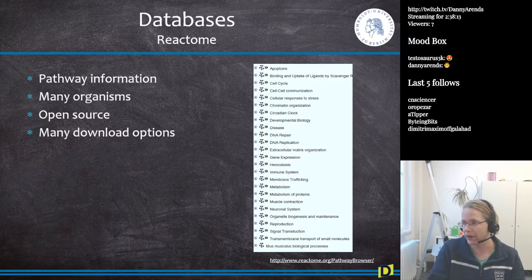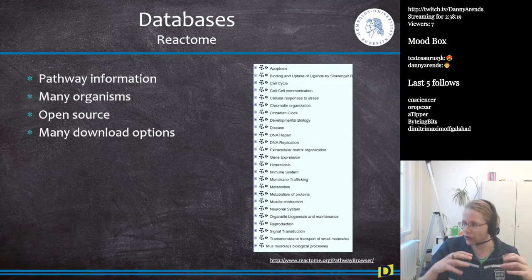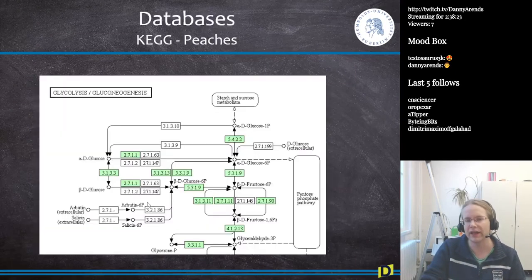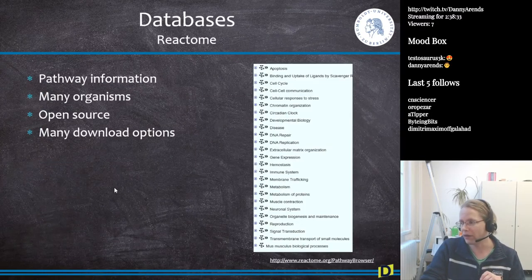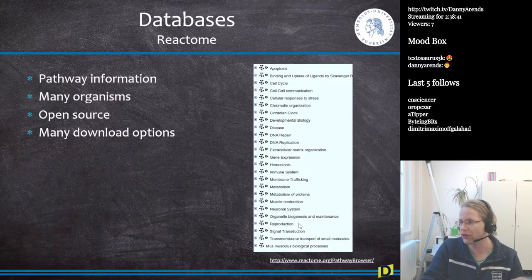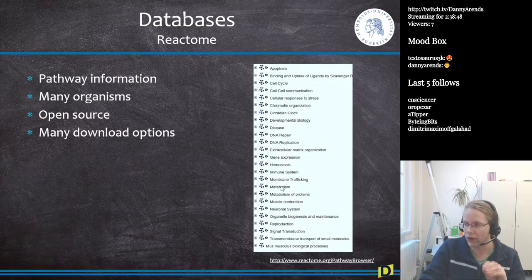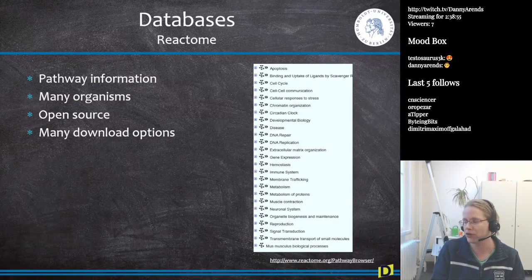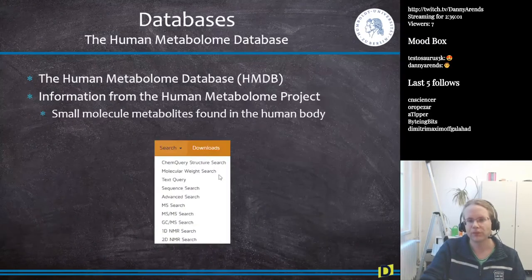One nice thing about Reactome is that it allows you to download pathway pictures to overlay your own data on them. However, Reactome operates at a much higher level than KEGG — rather than looking at individual metabolites and enzymes, it has pathways called 'immune system' or 'reproduction.' It does allow you to drill down, but not to the level of detail that KEGG provides. KEGG comes from a chemistry background while Reactome comes more from a molecular biology background, giving it a more global view.